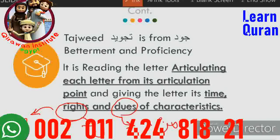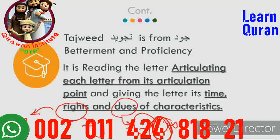The dues of the letters are characteristics that may change because of the sequence of letters. For example, if we have a noon followed by a ta, the noon's characteristics may change because of that sequence, whereas the same noon may change differently when a different letter follows it. These are the dues of letters — characteristics that change according to letter order in recitation. Applying tajweed means reading each letter with its proper articulation point, timing, and both its rights and dues.